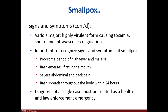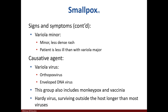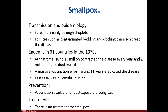Should a case be seen, it would be treated as a huge emergency. After four days, the bumps increase in size and begin to fill with liquid. They then start to scab over, but the patient is still contagious until the last scab falls. Variola minor causes a mild rash compared to variola major. The mode of transmission is through droplet contact and indirect contact with fomites. In the 1970s it was endemic in 31 countries, leading to an eradication effort that was successful in 1977. Smallpox can be prevented by post-exposure prophylaxis, and there is no treatment.